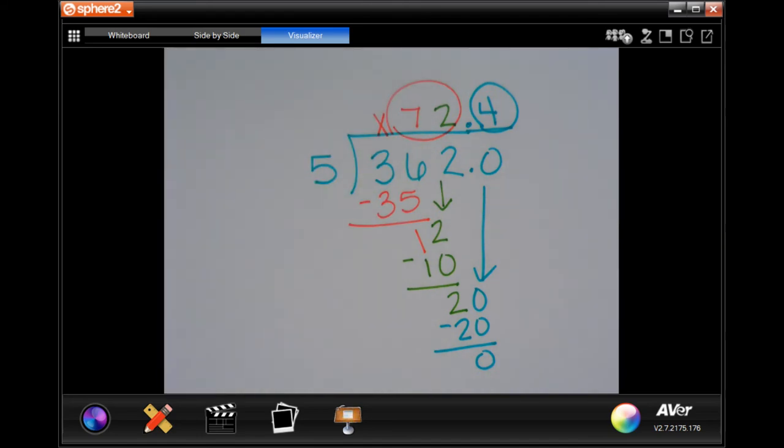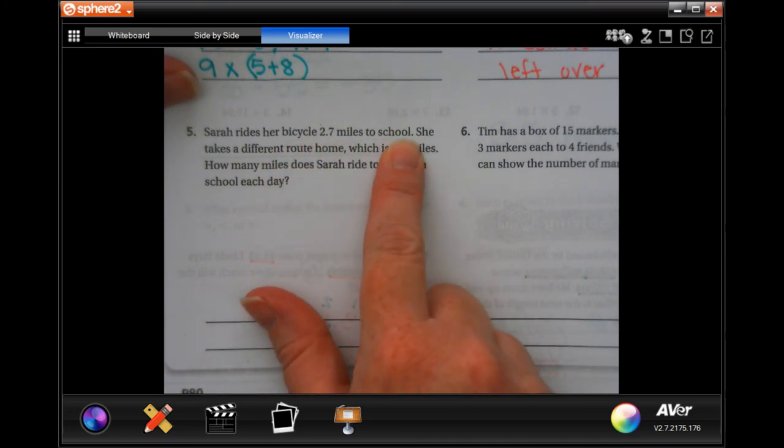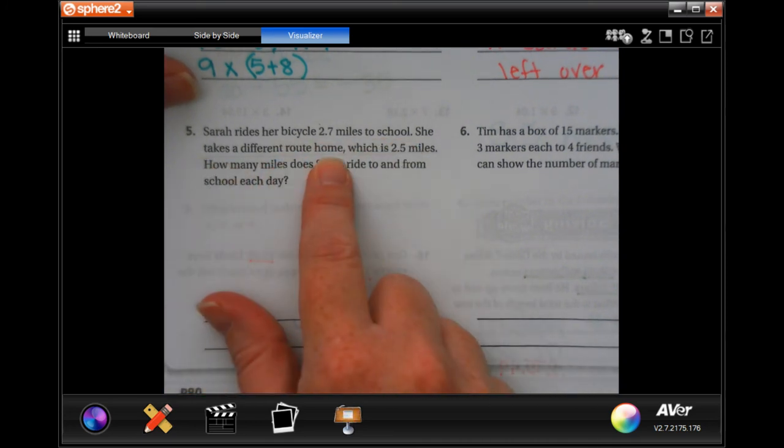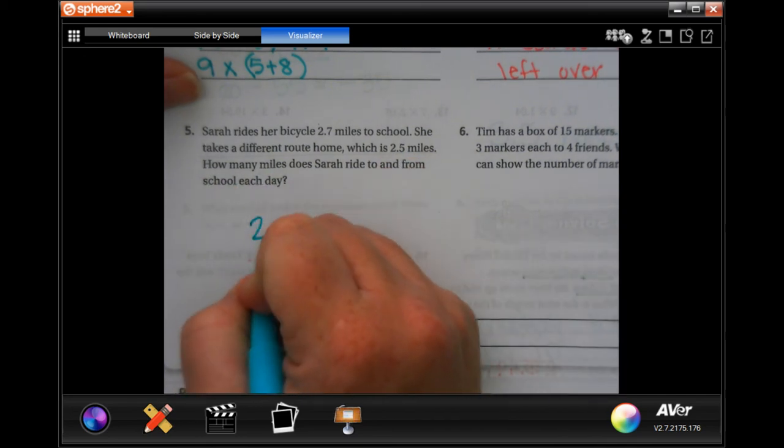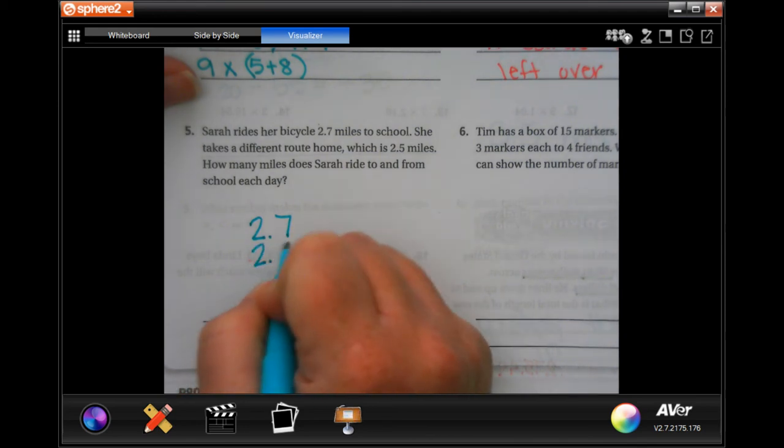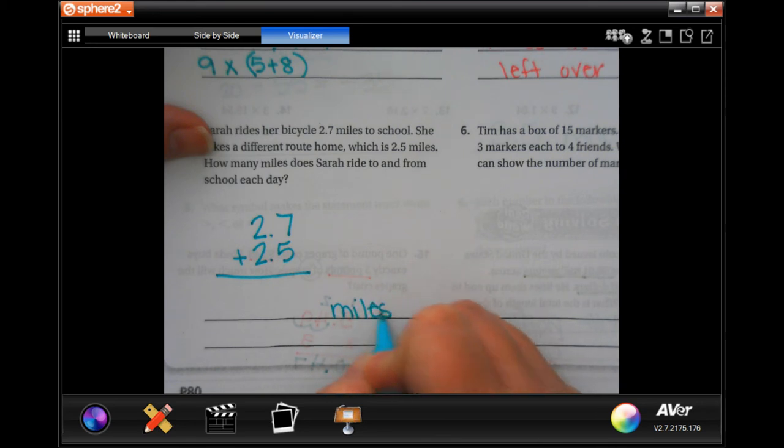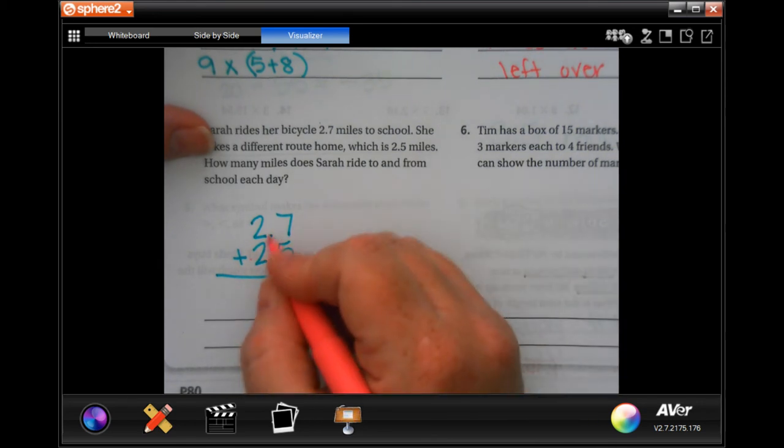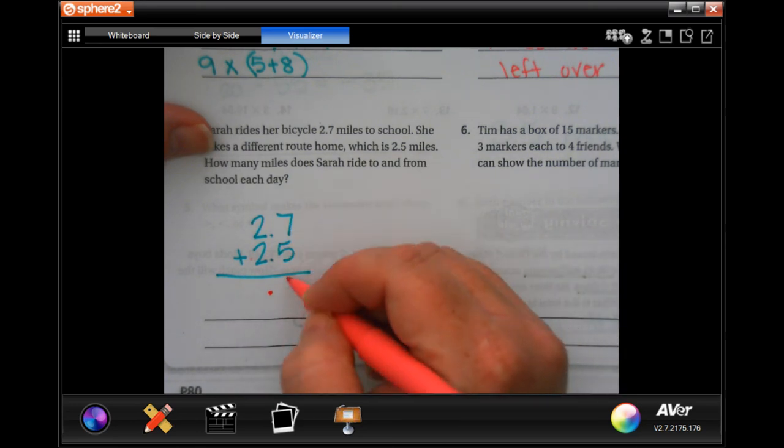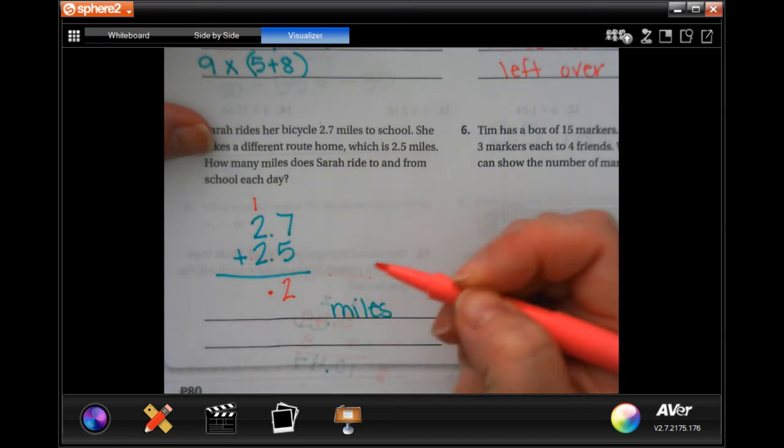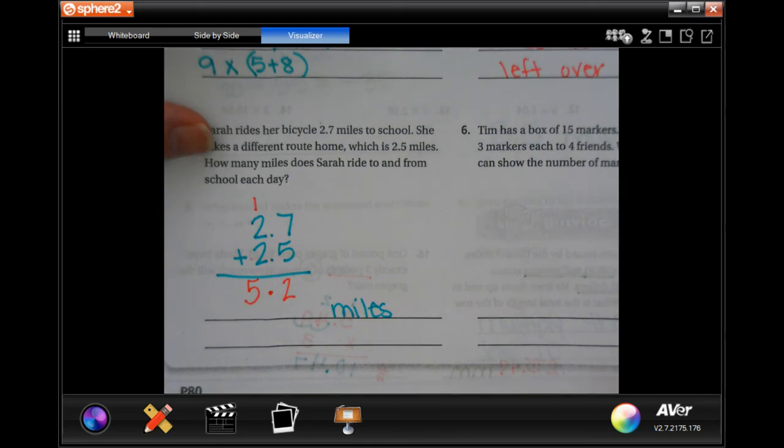All right, guys. Number five. Sarah rides her bicycle 2.7 miles to school. She takes a different route home, which is 2.5 miles. How many miles does Sarah ride to and from school each day? Well, 2.7 and 2.5. And she does both of those. So we're just going to add them up. And whatever our answer is, it's going to be in miles. So first, when you're adding and subtracting decimals, the first thing you do is drop your decimal. Now 7 plus 5 is 12. 2 down, carry 1. 1 plus 2 is 3. Plus 2 more. 5. 5.2 miles.